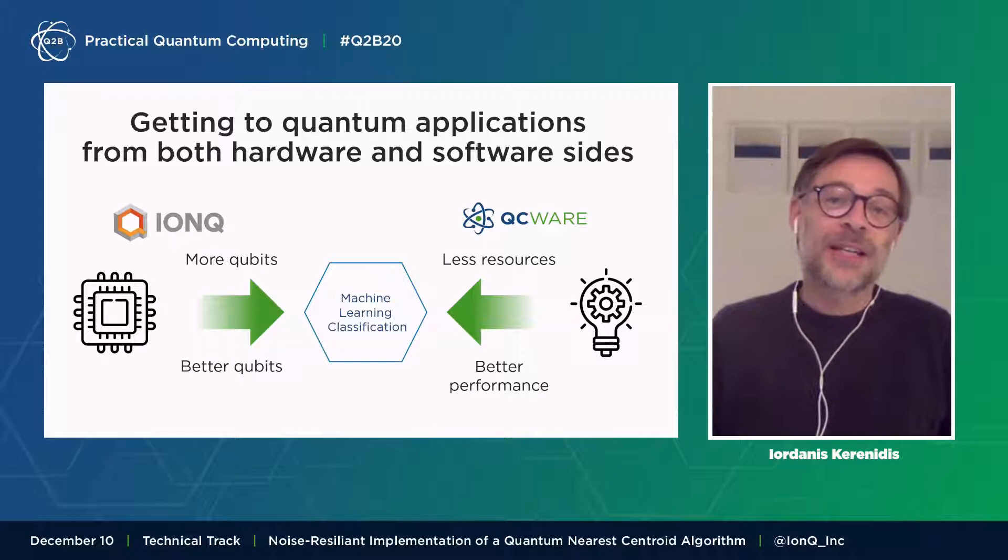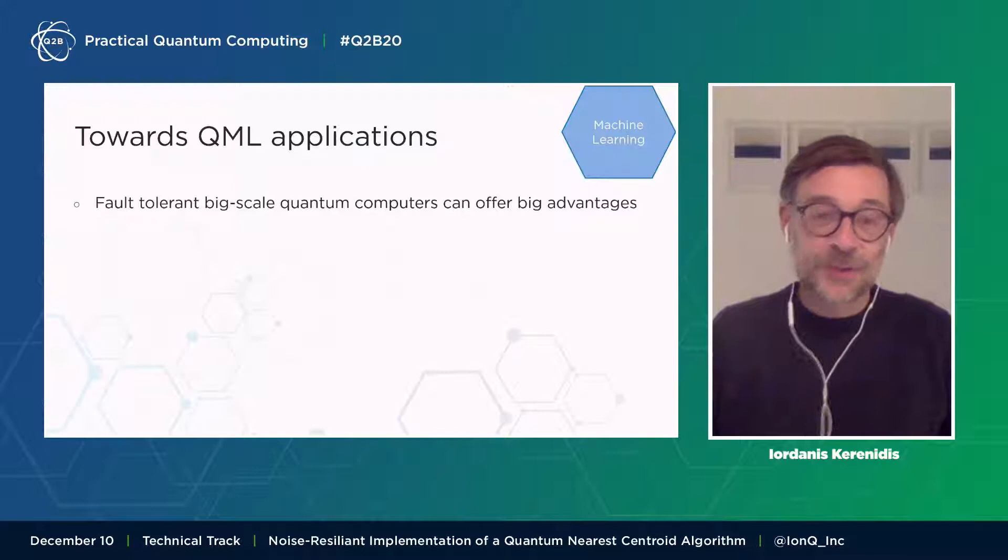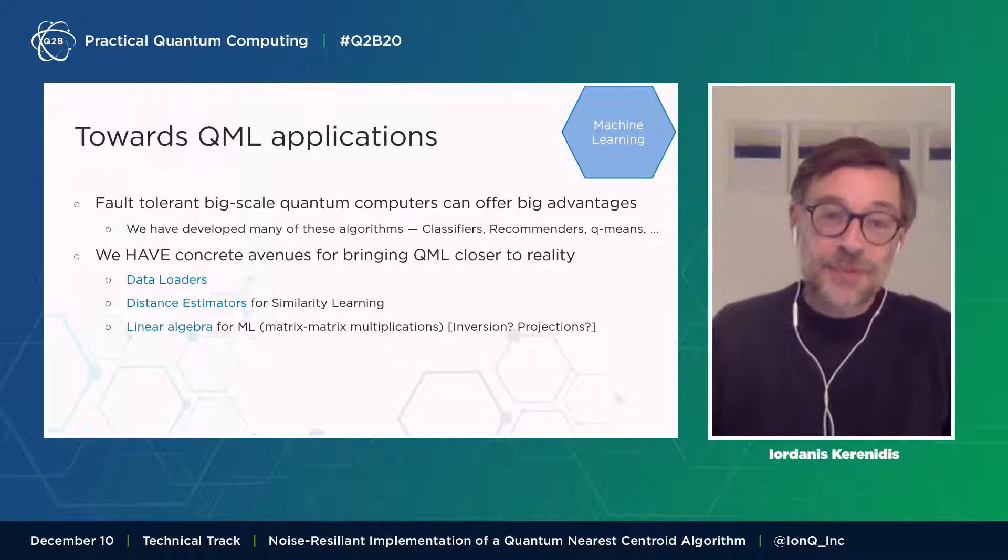The specific application that we will look at is in the field of machine learning and more precisely in classification. So why quantum machine learning? We think that quantum machine learning is a very good area where we can look for applications of quantum computers and in particular NISQ machines. The first reason is that we know that fault-tolerant big scale quantum computers can offer actually big advantages. There has been a lot of work in recent years about this and a number of these algorithms actually come from our team.